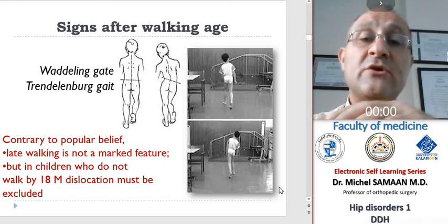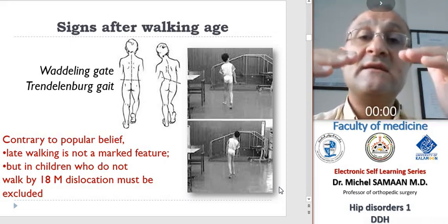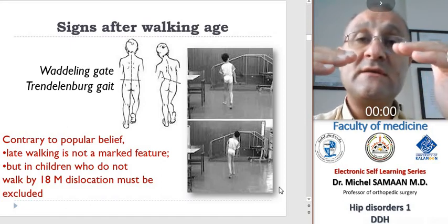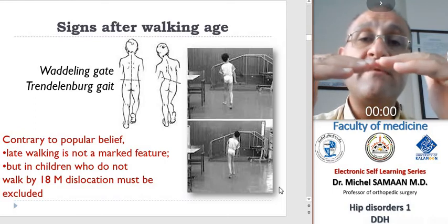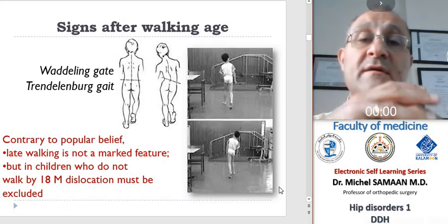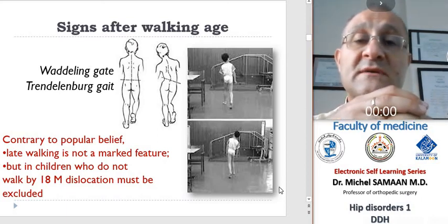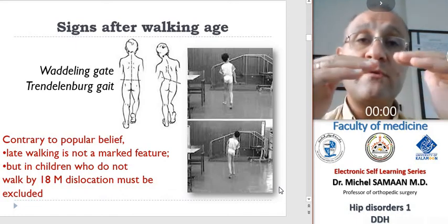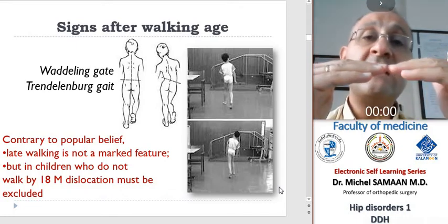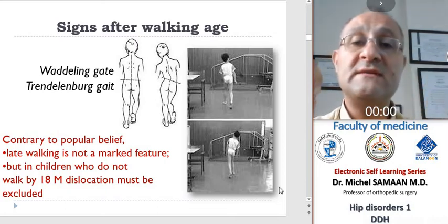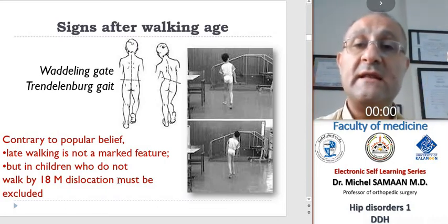The Trendelenburg sign: when the child stands on the affected (dislocated) side, they are not able to keep the pelvis horizontal because of weakness of the iliacus muscles or the abductors. So the contralateral side will fall down and will not remain at the horizontal level.